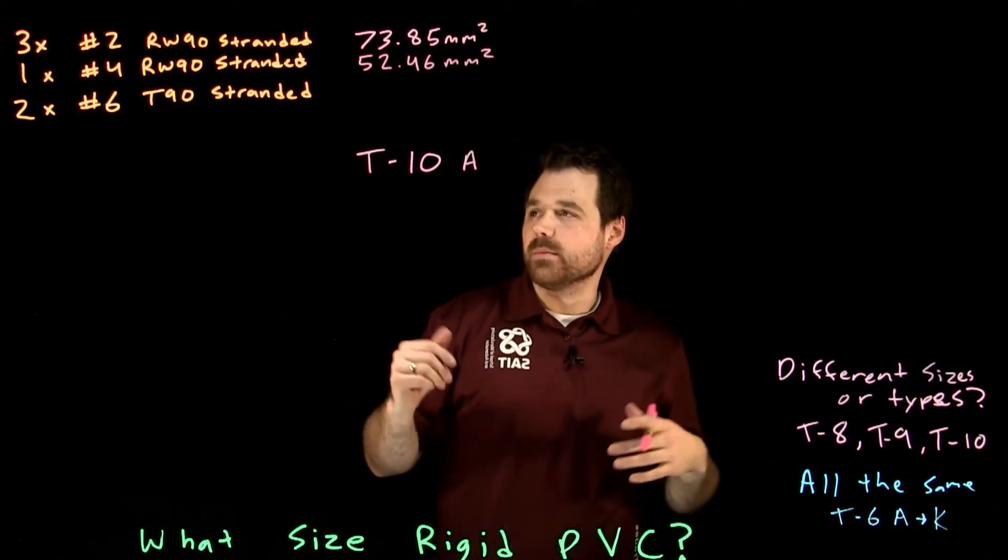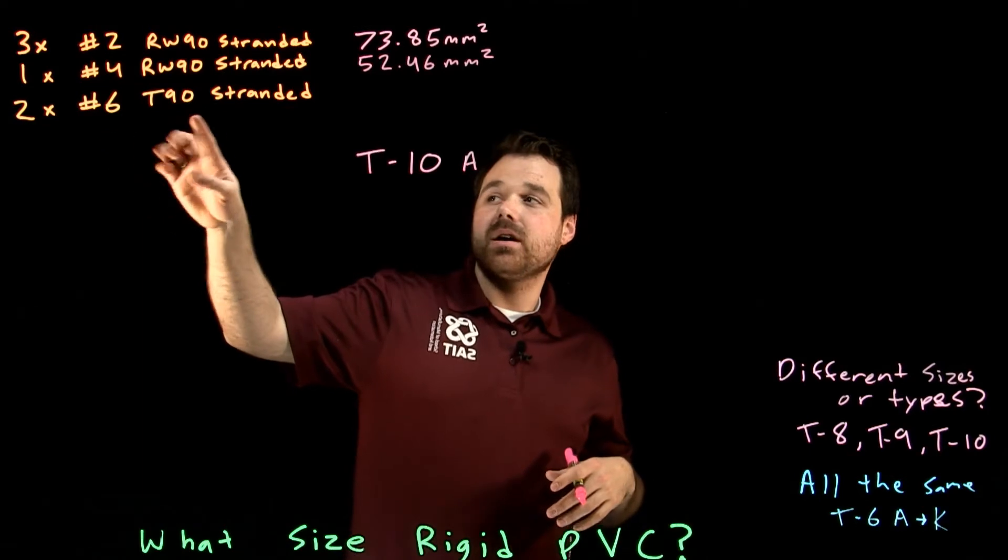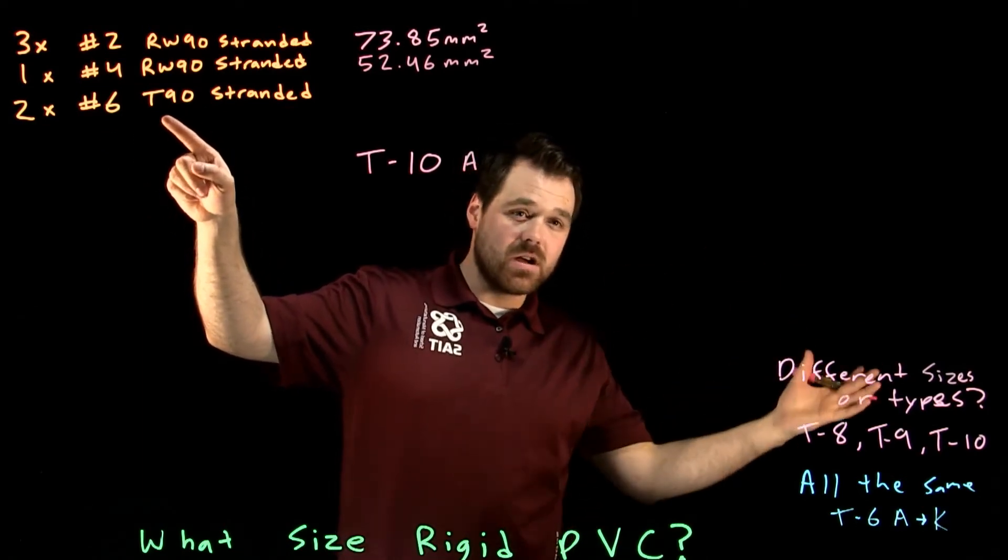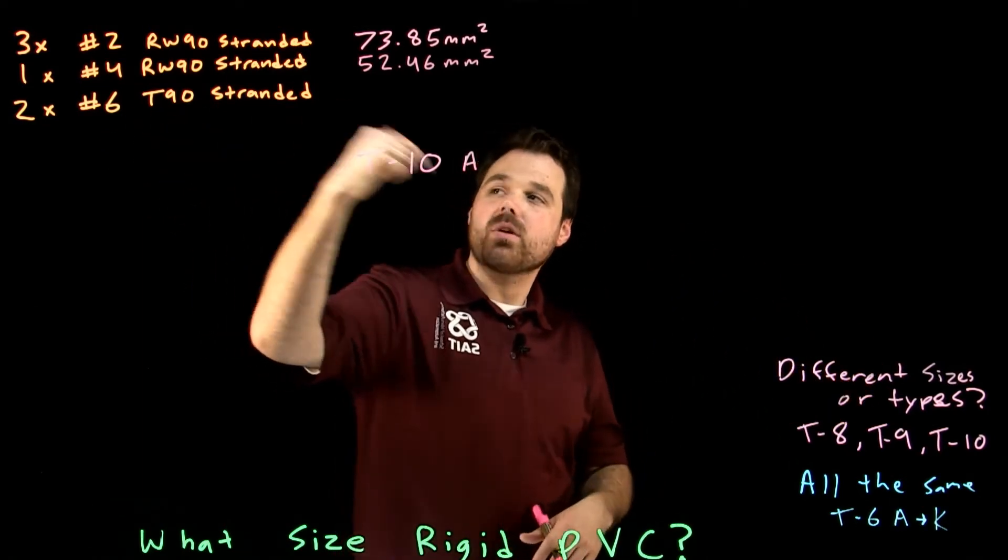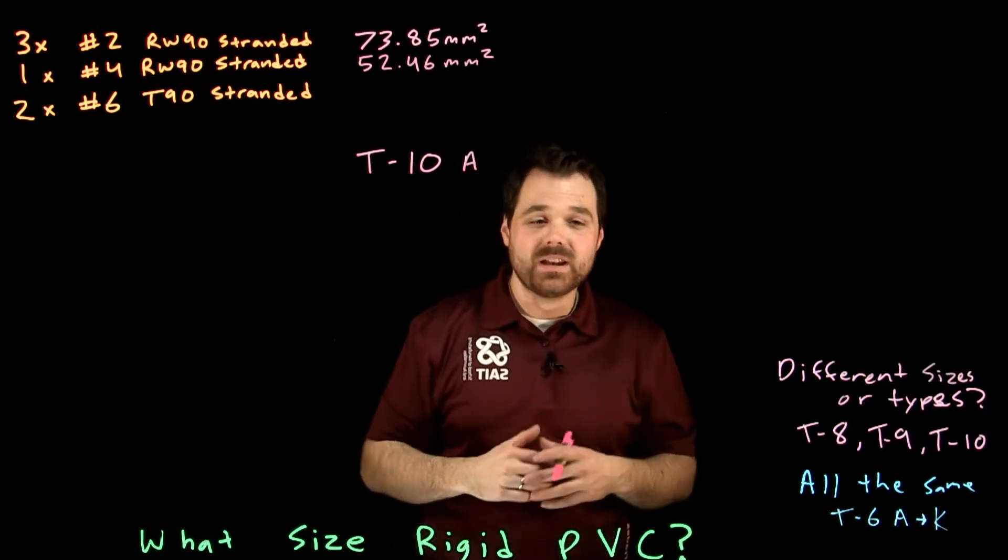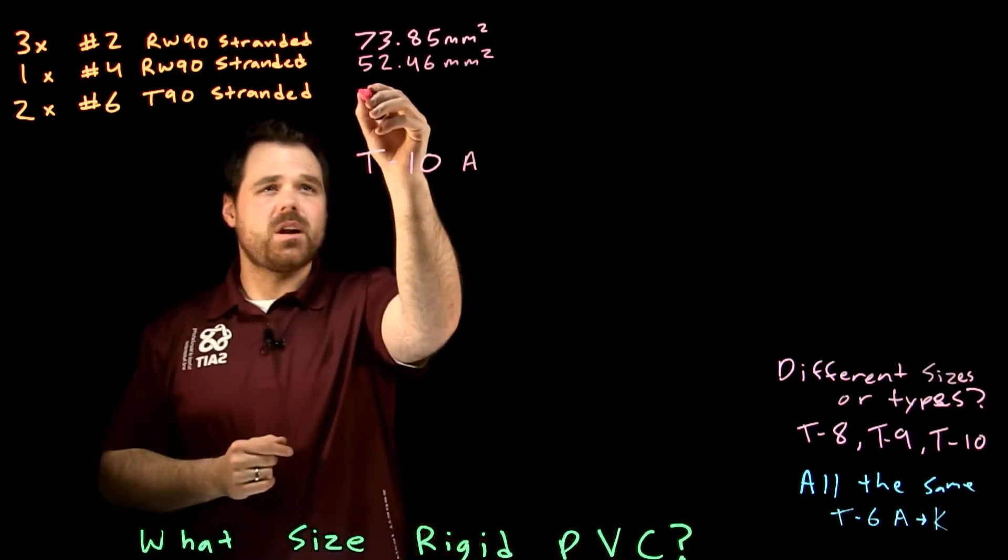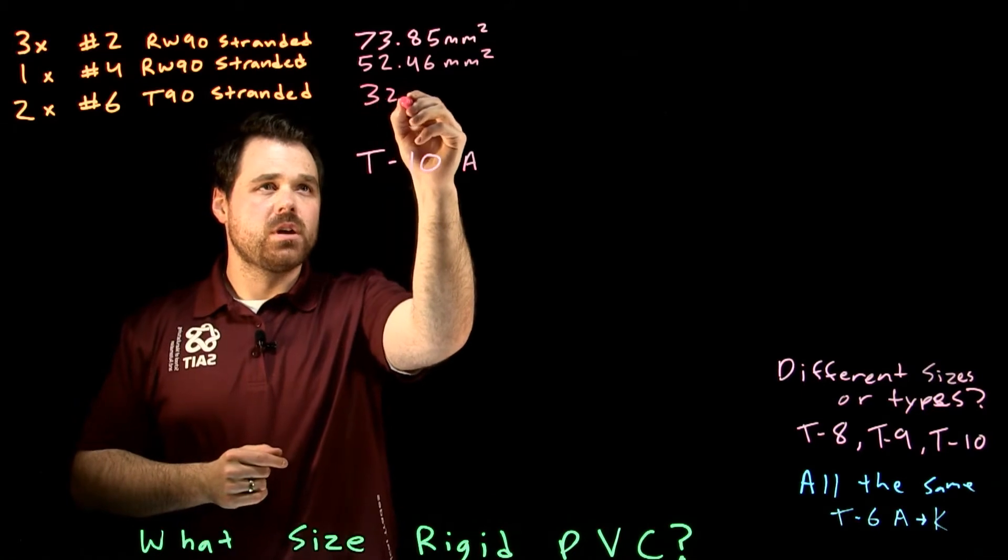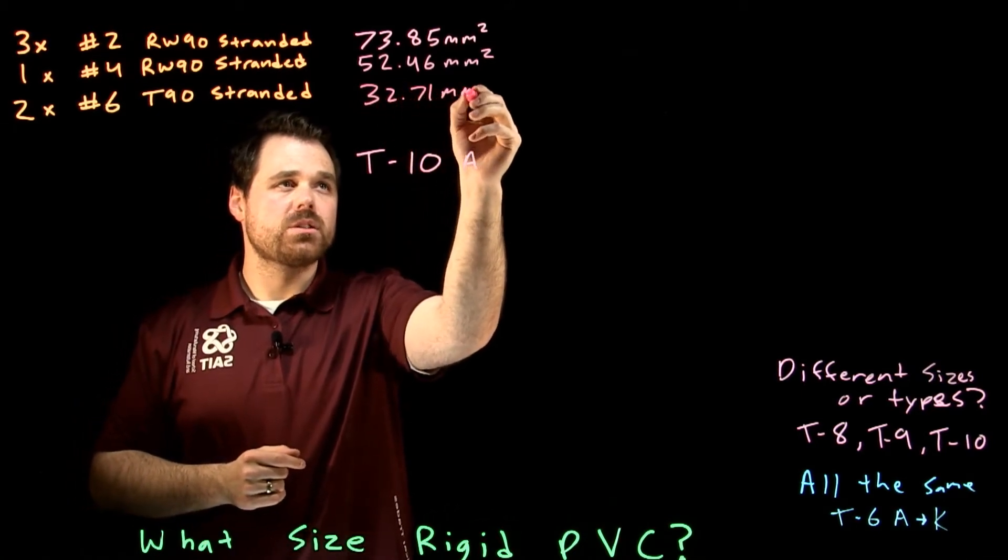Then we go back. Table ten A, number six. Now we're paying attention. The T90 is actually not in the first column anymore. We're going to go over to the column that's for T90, number six, which tells us they are each good for thirty two point seven one millimeters squared.